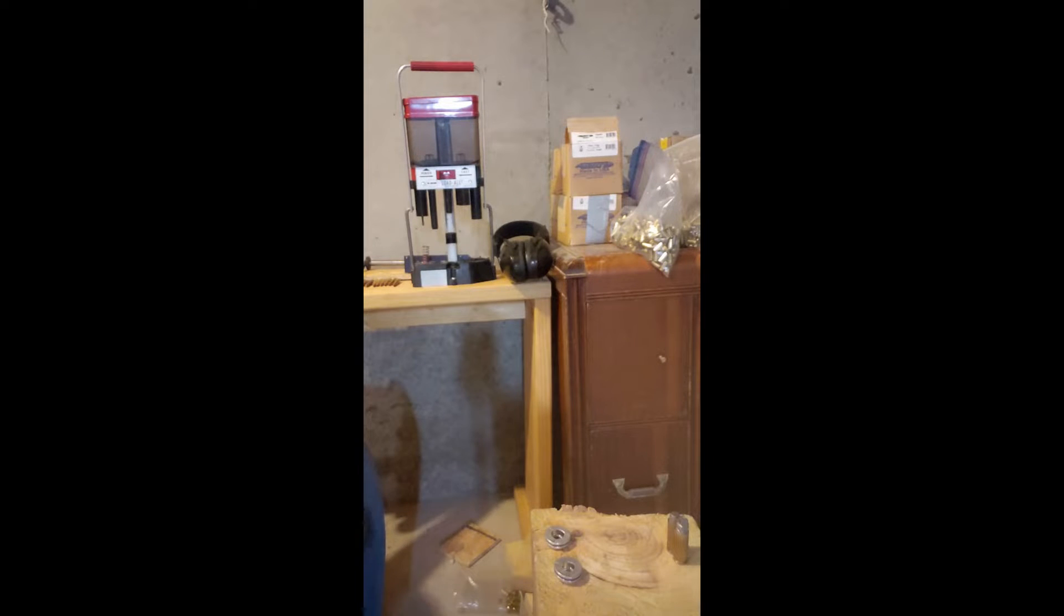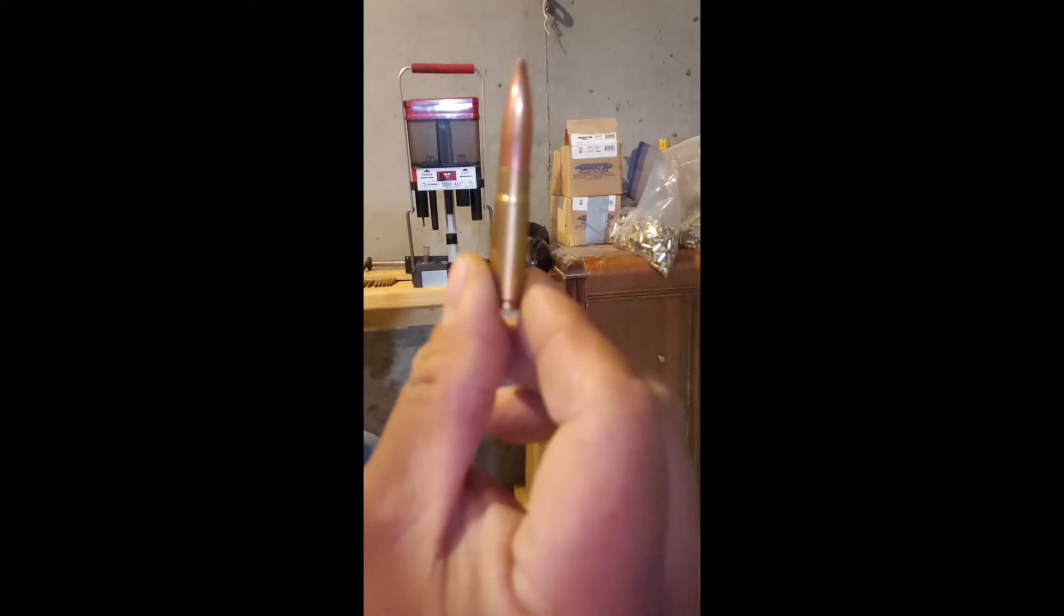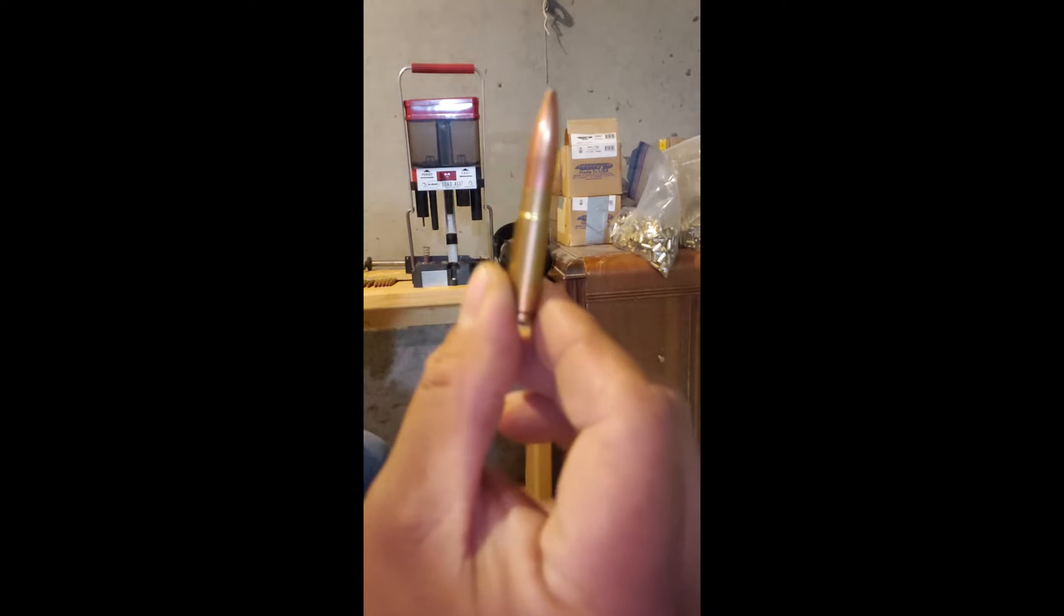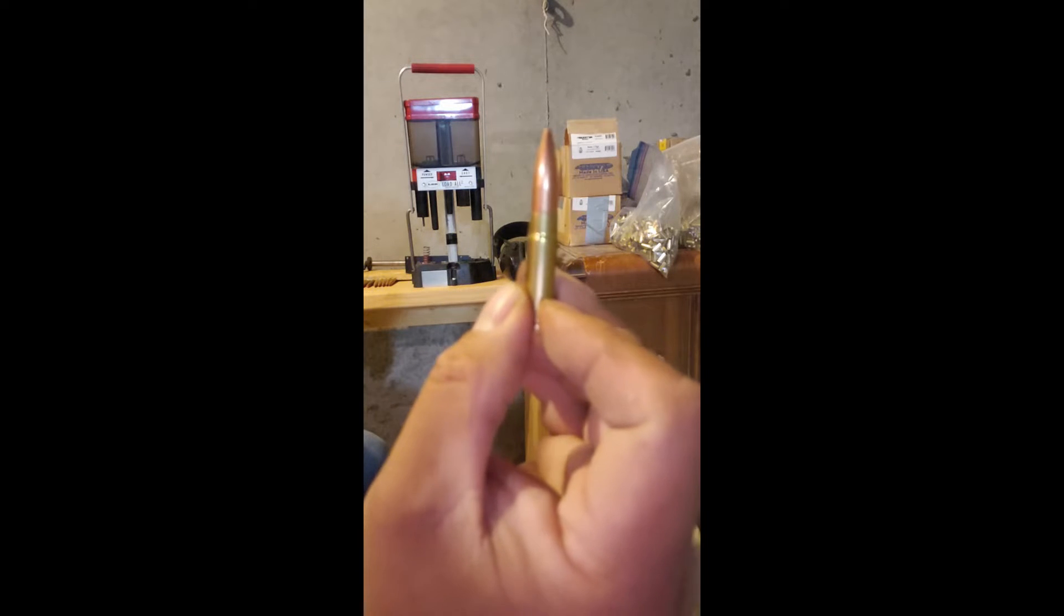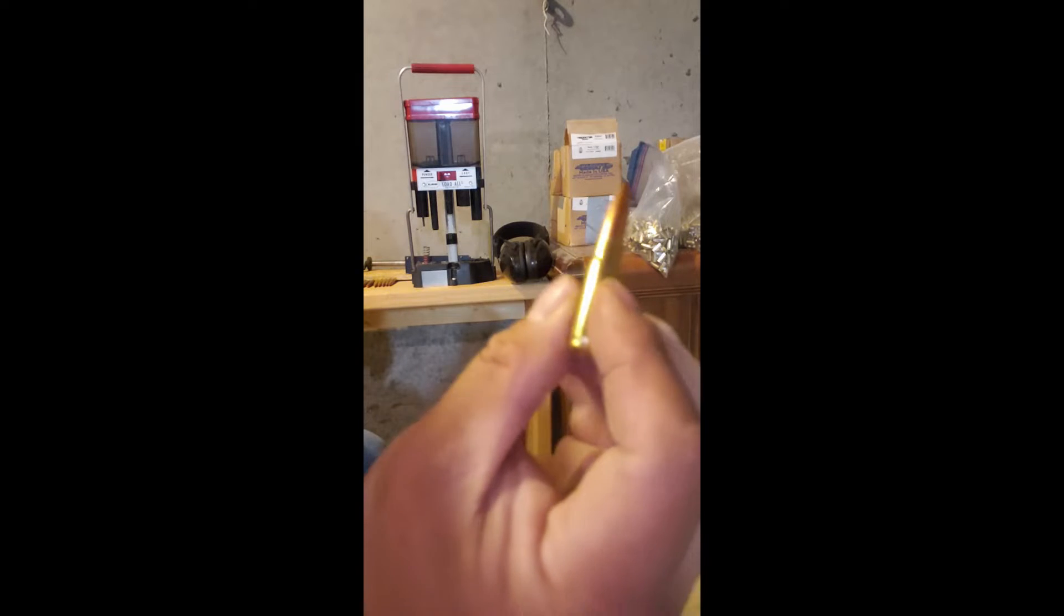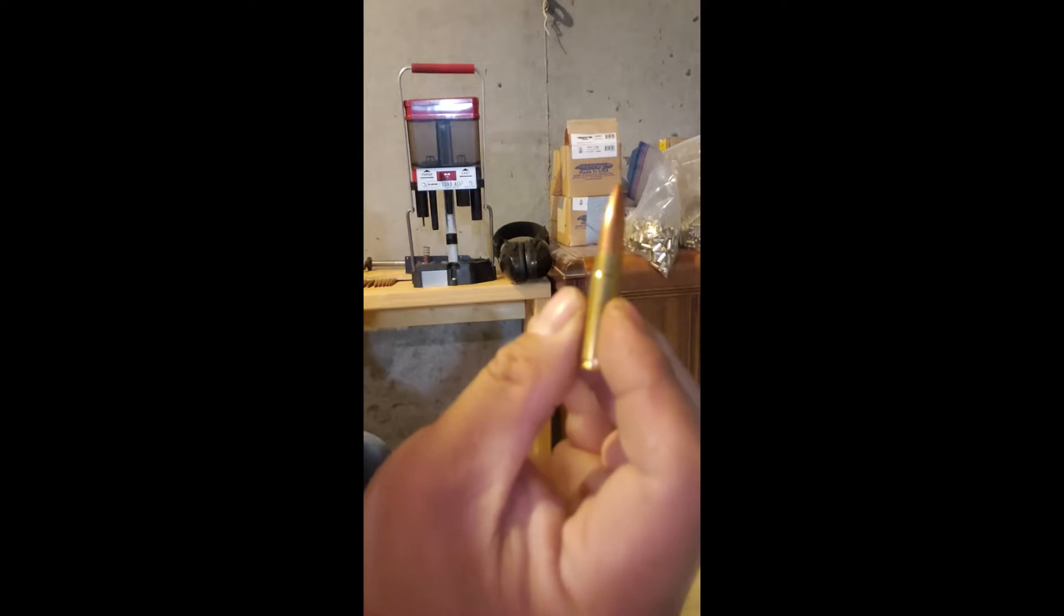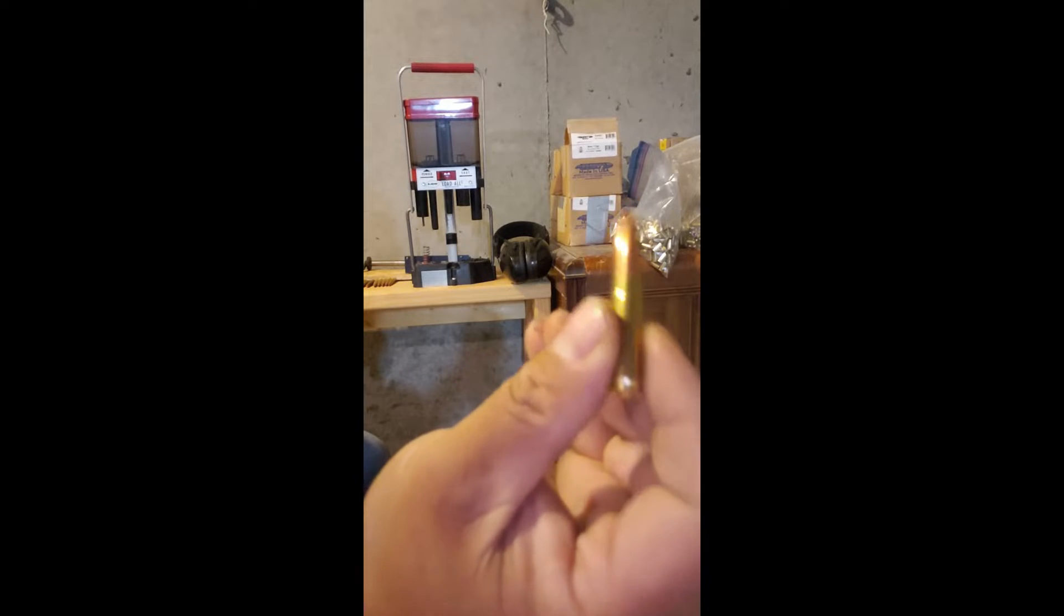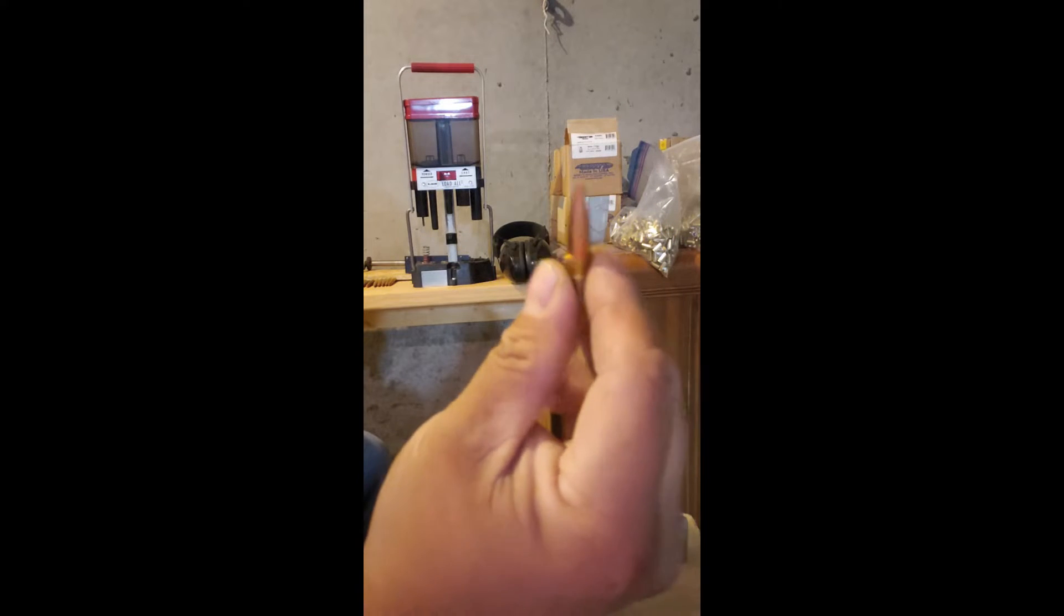So another one that I'll disassemble today is one of my 300 blackout rounds that I made up probably about six years ago. This just in the barrel that I have now is slightly seated a little bit too long and the bolt would not close completely on it.